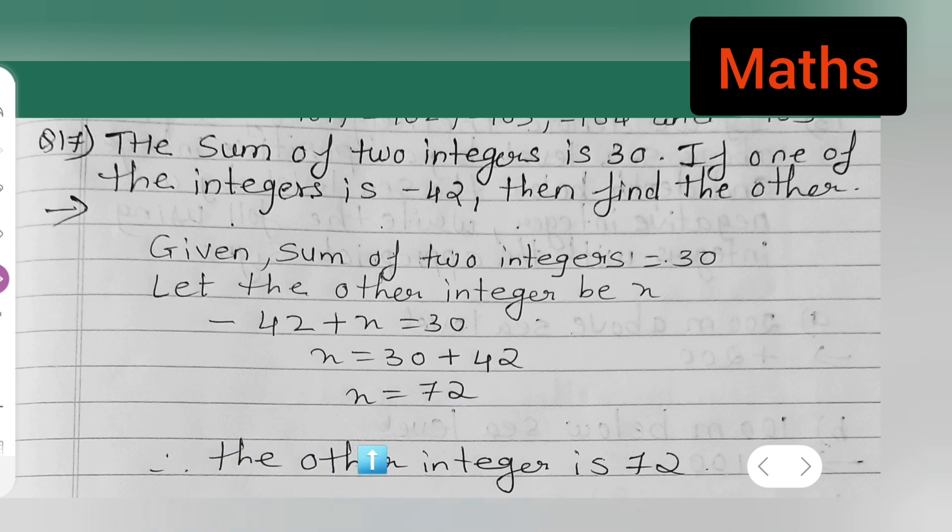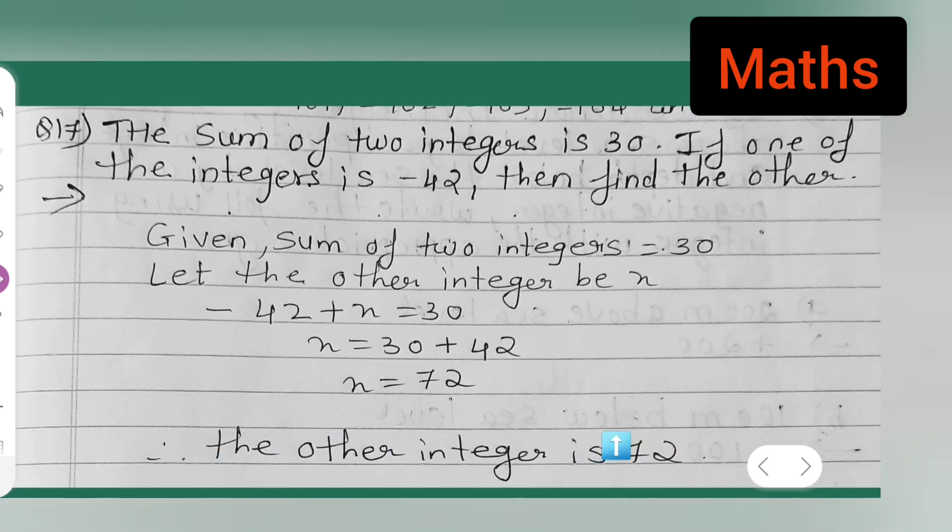Therefore, you can say the other integer is 72. You can write down: therefore, the other integer is 72.